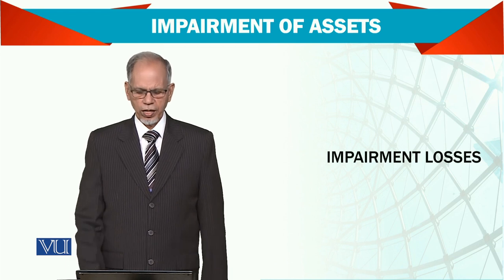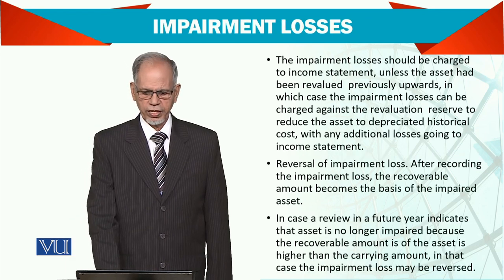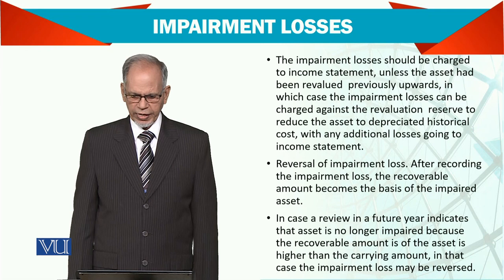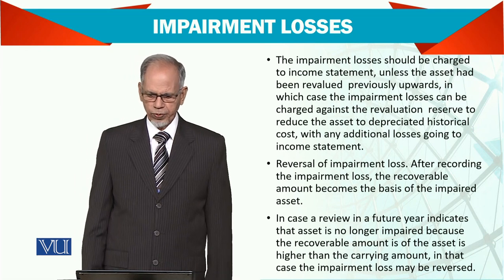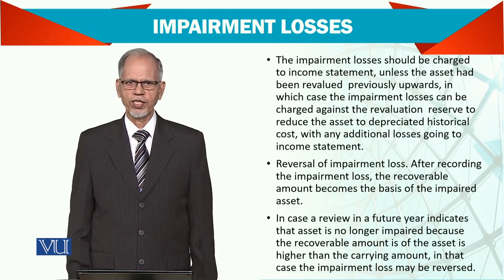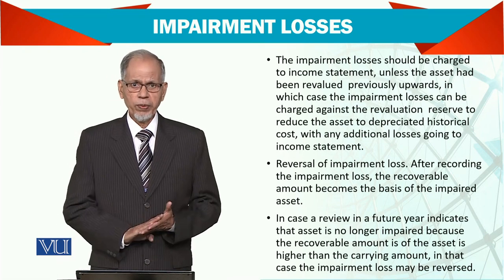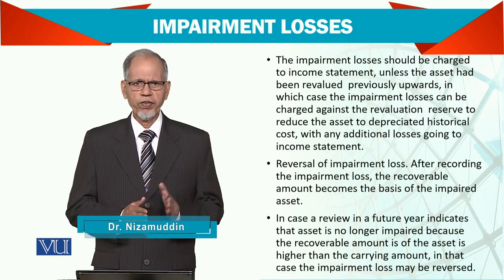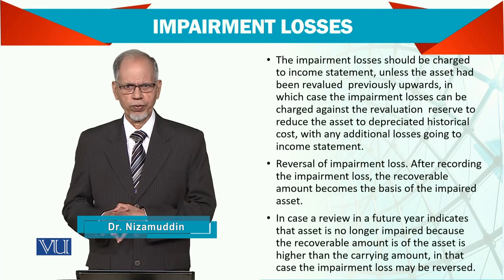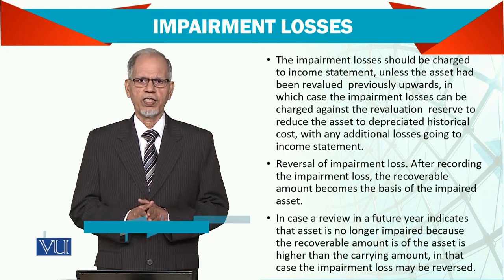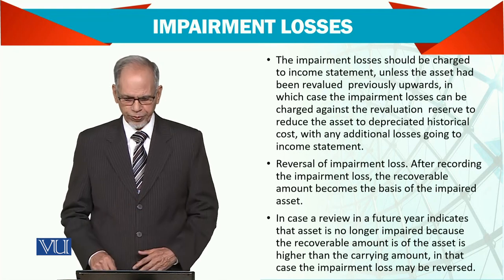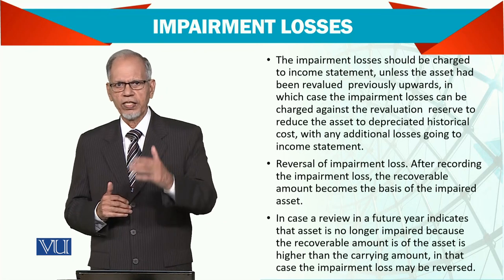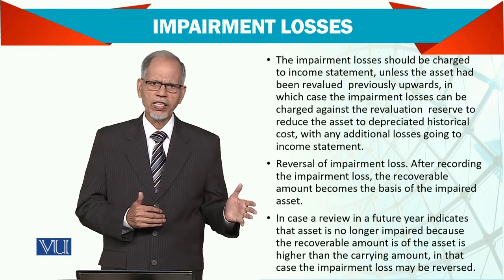Let's work out how the impairment loss is calculated. The impairment loss should be charged to the income statement unless the assets have been revalued previously upward. For property, plant and equipment, we need to consider which method we are following — the cost method or the revaluation method — as in both cases, if there is impairment loss, the treatment is slightly different. We must compare whether the impairment is compared with the revalued value or with the cost values.